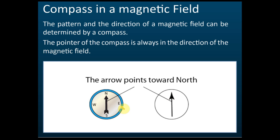The compass pointer points to the north when there is no other magnetic field — if you just place it on the surface of the earth. But if you place it inside a magnetic field other than the earth's magnetic field, then it will follow the pattern of that magnetic field.